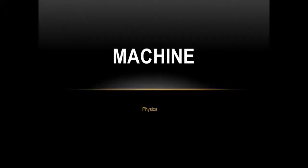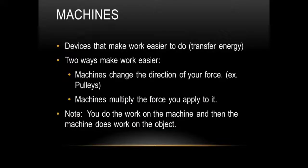All right, so let's take a couple minutes to talk about machines and how they are useful to us. A machine basically is any device that is used to make our work easier. So it's an easier way for us to transfer energy. Two ways that machines make our work easier: machines can change the direction of your force, such as pulleys.